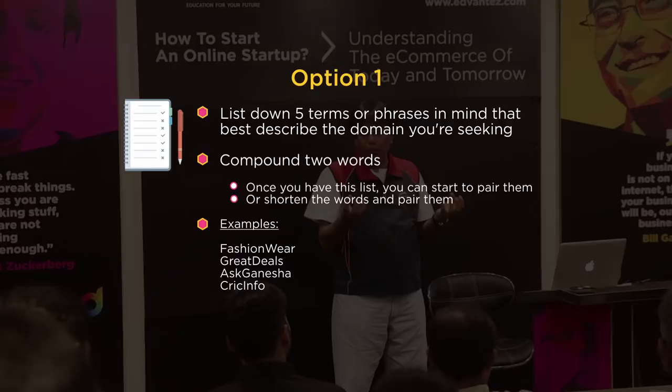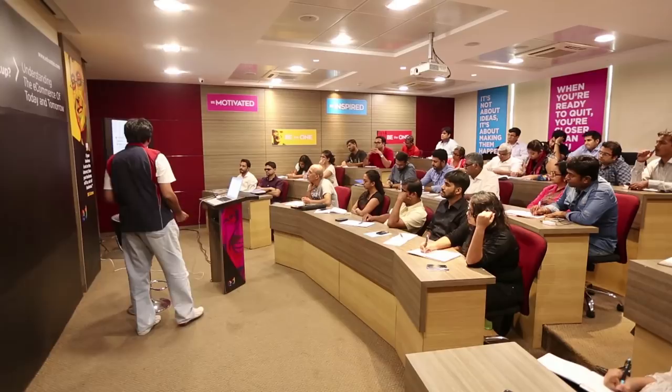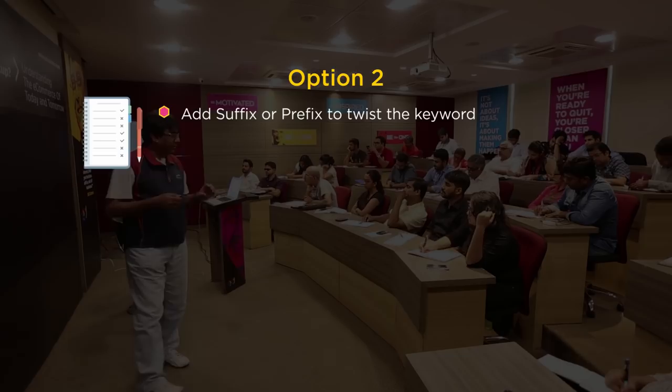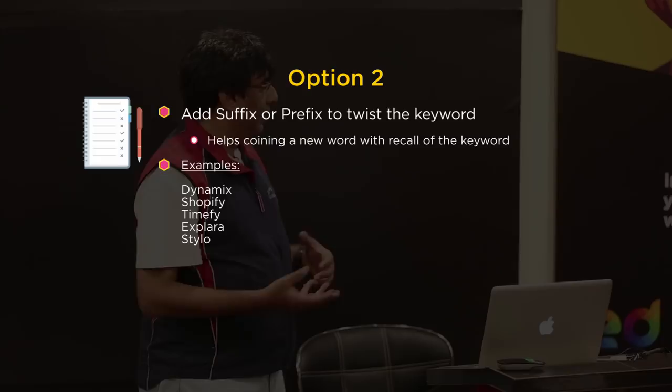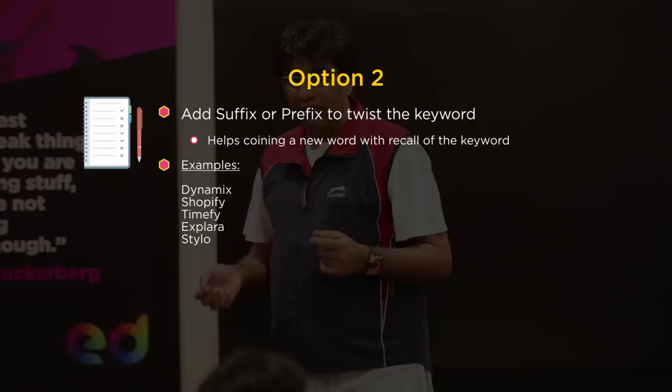Option two is: you twist the word completely. You twist the suffix or prefix — the beginning or ending of the word. For example, Shopify, Timeify, Explara, Stylo. Style becomes Stylo, Shop becomes Shopify — you change the suffix of the word.